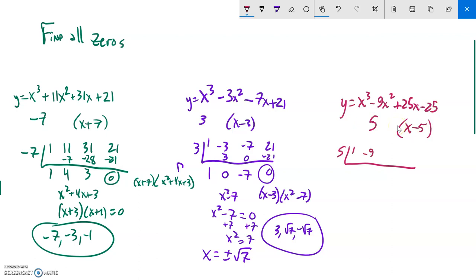And then I have one x cubed, negative nine x squareds, 25 x's, and negative 25 ones. So this is what I'm going to do. I'm just going to bring down the first term with my synthetic division. Now I multiply, five times one is five. Then I add, negative four, multiply, negative 20, add, five, multiply, 25, zero, my remainder zero. So that did go into it.